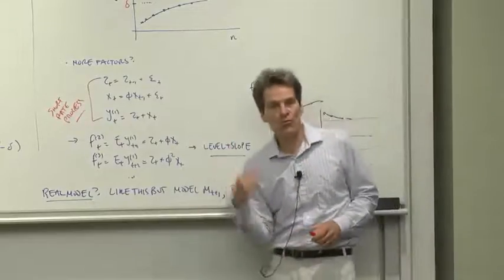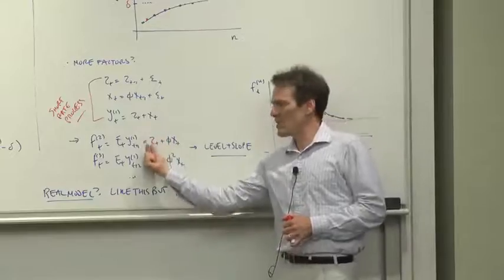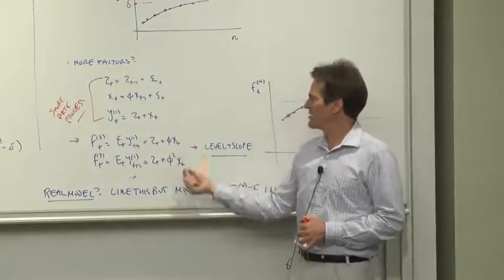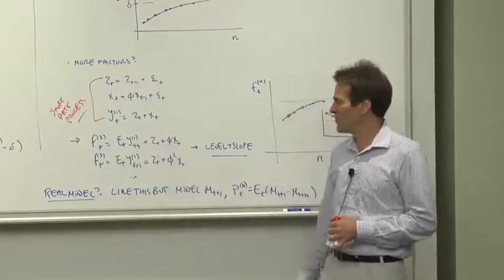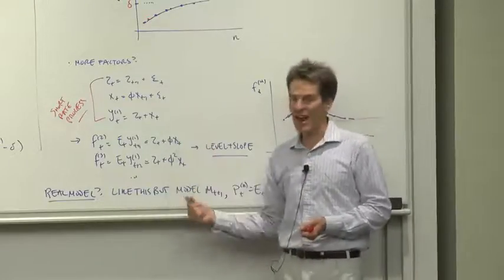You have a two-factor model of the term structure. The loadings on Z are always 1, 1, 1, 1, 1. The loading on X are phi, phi squared, phi cubed, and so on and so forth. So you have a level factor, Z, and a slope factor, X.